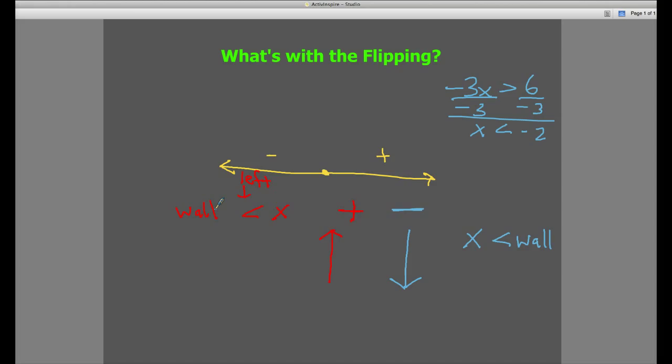And also, it speaks to positive and negative being counterbalancing forces, or specifically, in this example, direction. So, it's not really that weird that you would flip the inequality, but if you know why you do it, it makes more sense about how you would use it in the future.